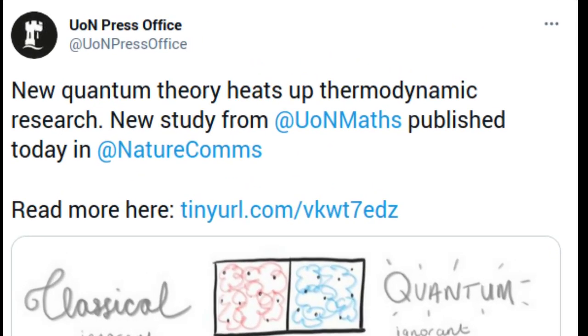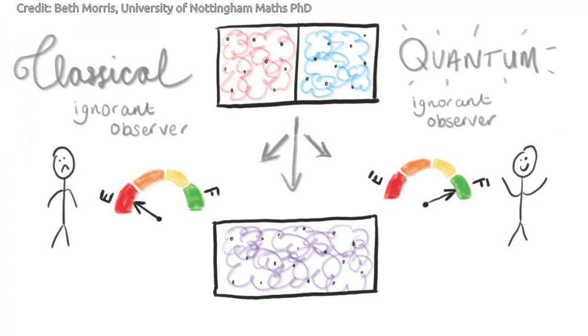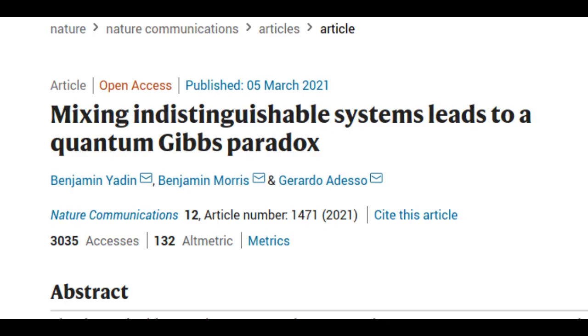Mathematicians from the University of Nottingham have applied new quantum theory to the Gibbs paradox and demonstrated a fundamental difference in the roles of information and control between classical and quantum thermodynamics. Their research has been published in the journal Nature Communications.